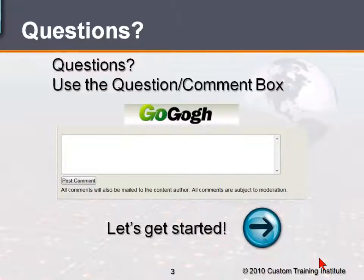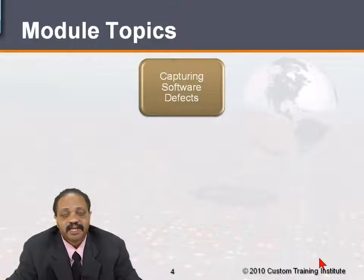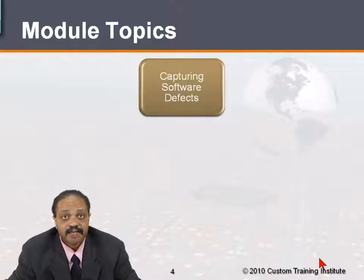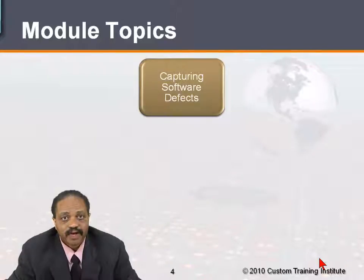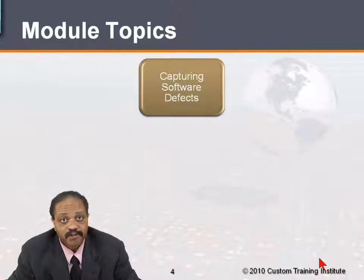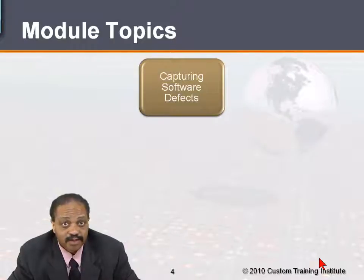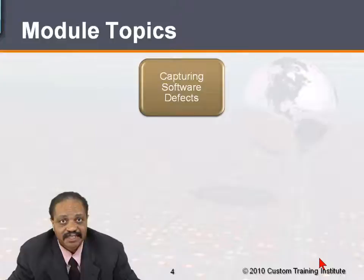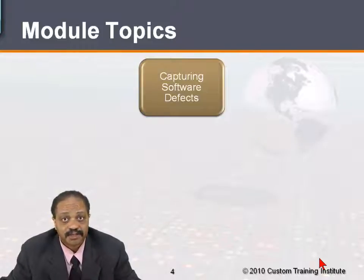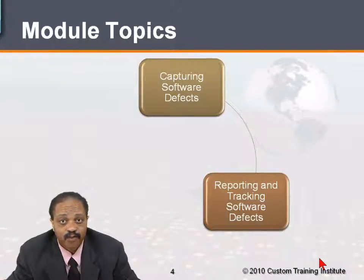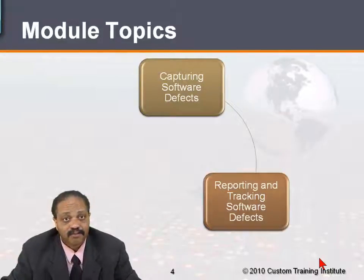Okay, let's get started. We're going to be talking about several different items during this presentation. First of all, we're going to be talking about the mechanism that's used to help capture software defects. Software defects refers to software anomalies — situations where the software does not perform as expected. It could be because of a bug in the software, or simply because the software performs as far as the requirements go but doesn't perform the way the users expect it to. We need to capture that information and have a mechanism for reporting and tracking it.